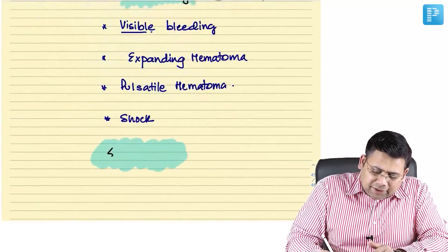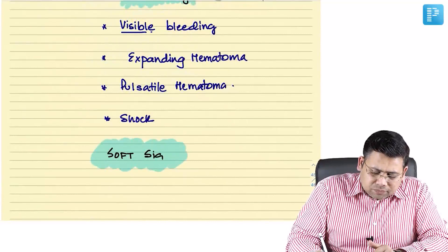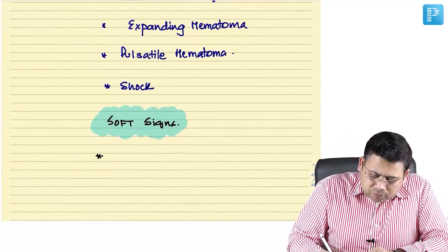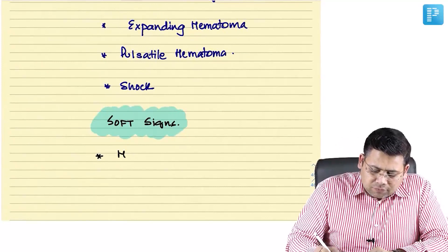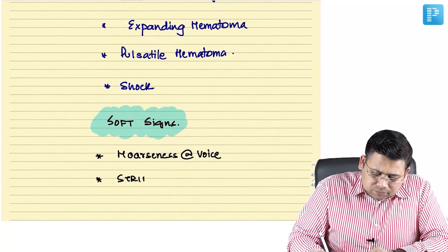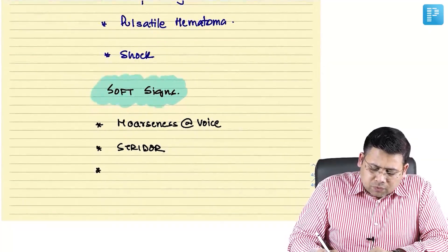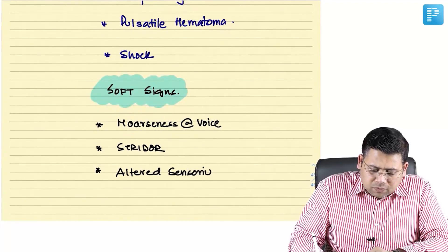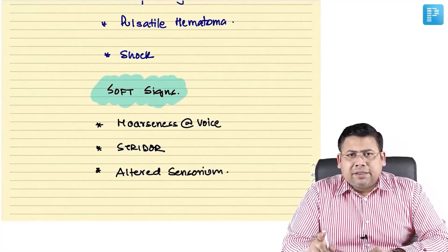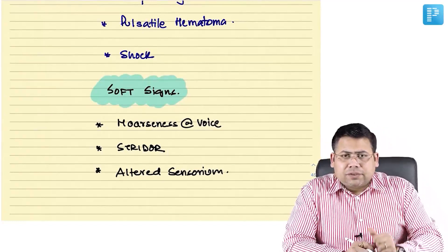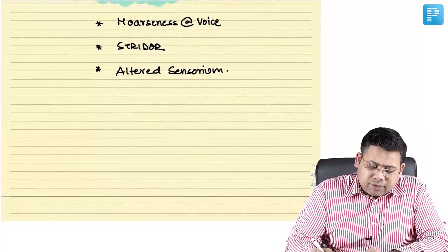The soft signs are indirect indicators. They include hoarseness of voice, stridor, and altered sensorium. Soft signs don't mean the patient is out of risk — they indirectly suggest ongoing vascular trauma or something serious. These are the hard signs and soft signs of neck injury.